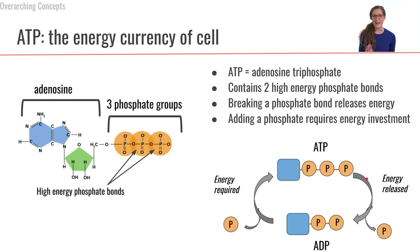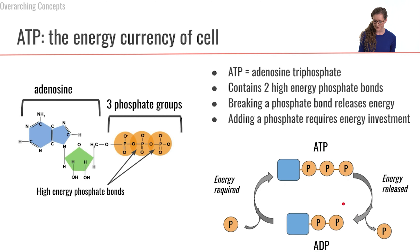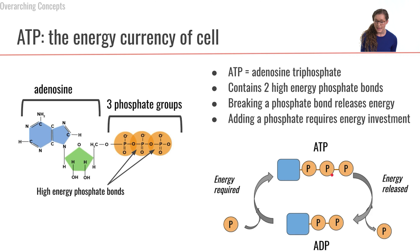When we break off one of the phosphates from ATP in order to convert it to ADP, or adenosine diphosphate — two phosphates — that is when we release energy, because we are releasing the energy that was previously held in that chemical bond between the two phosphates.